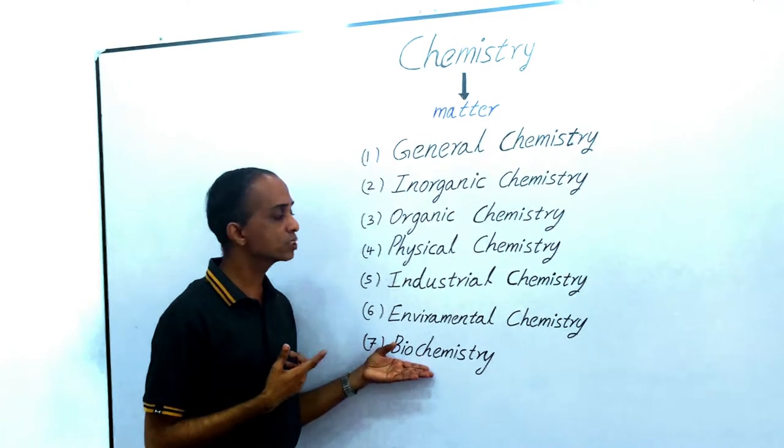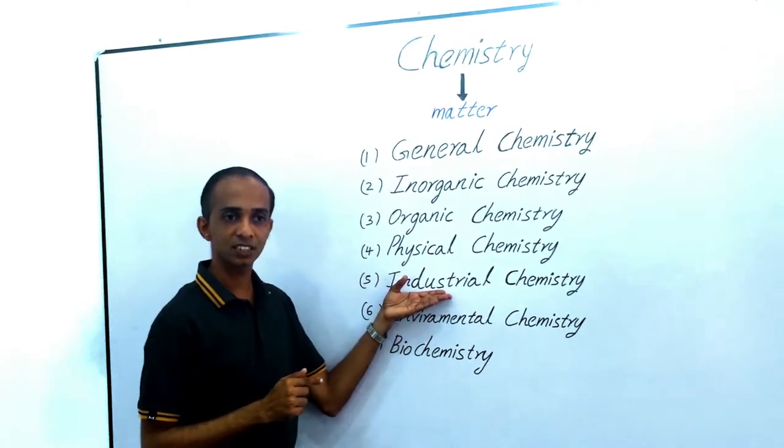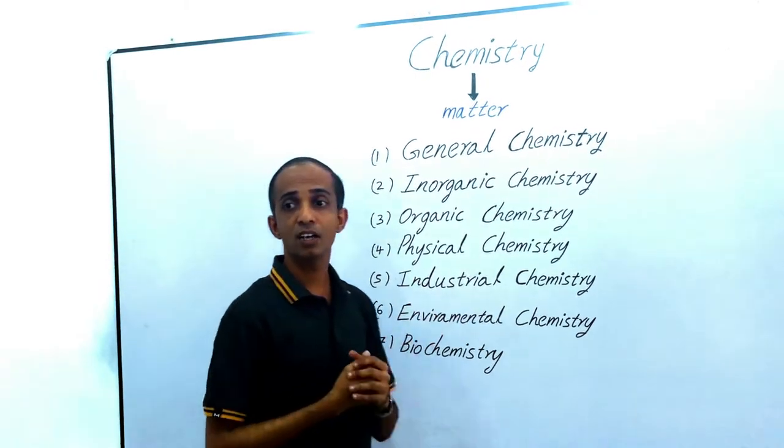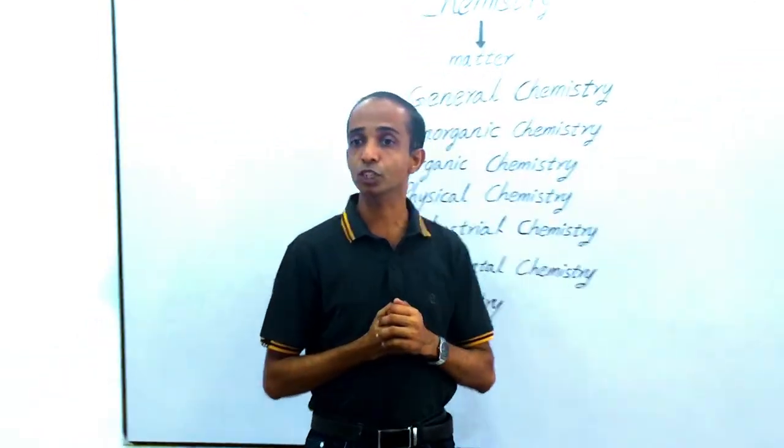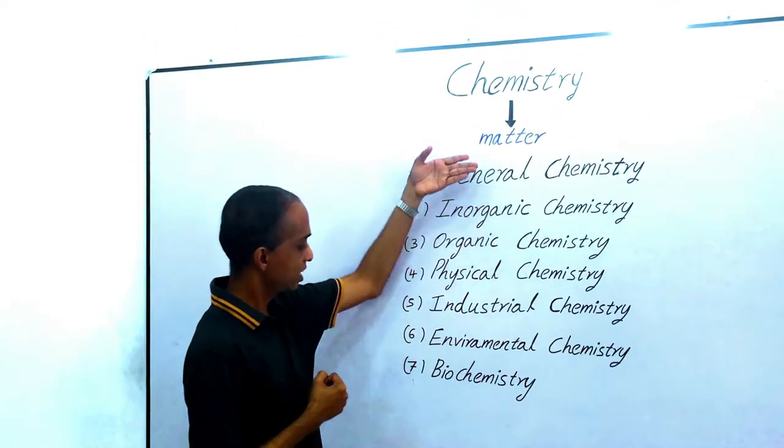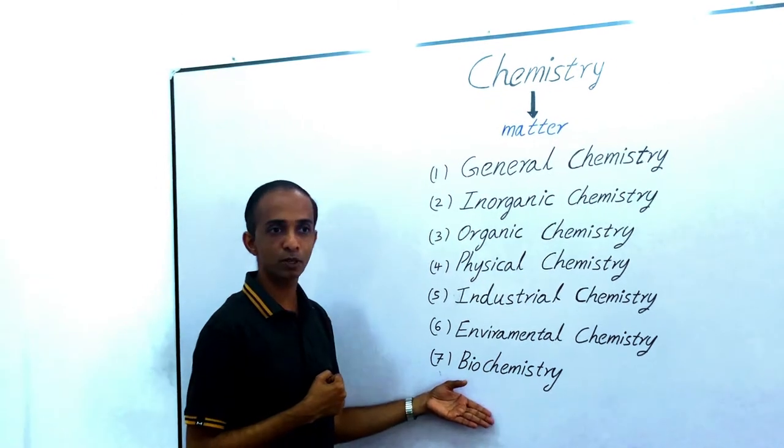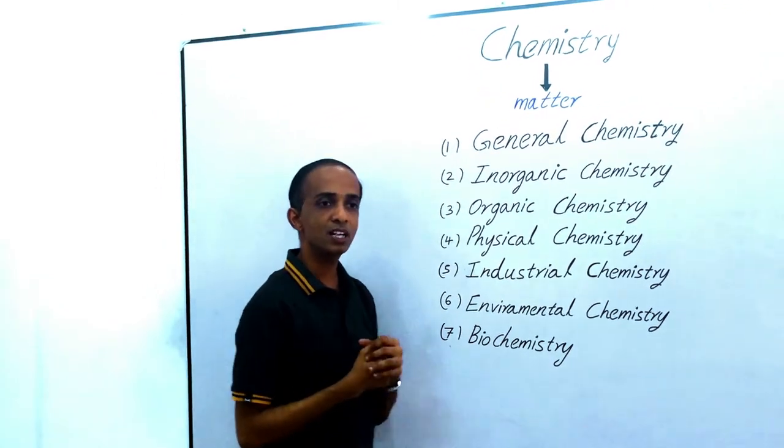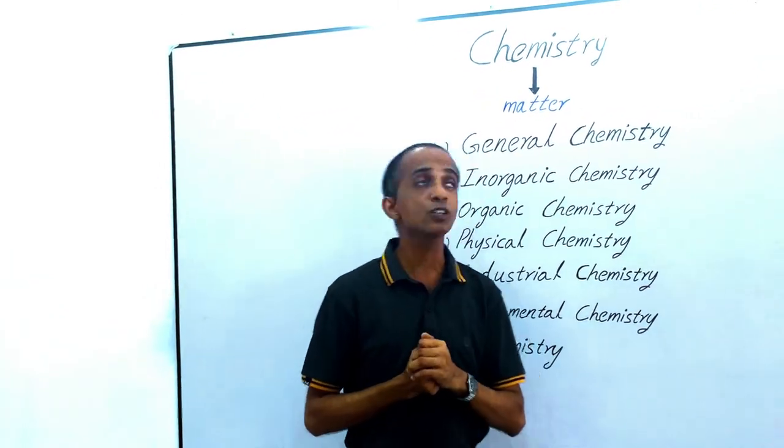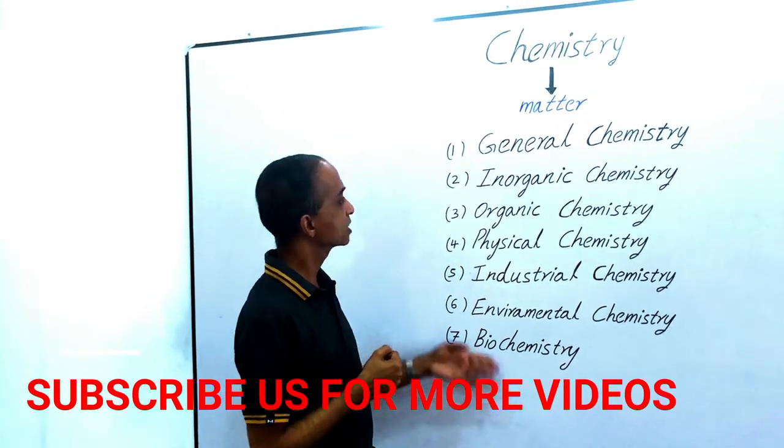The biochemistry knowledge also sometimes used to produce industrial products, such as liquor production, ethanol production from carbohydrates. These are the sub-topics of chemistry, main sub-topics. Some people include nuclear chemistry also in chemistry. But main topics are these.